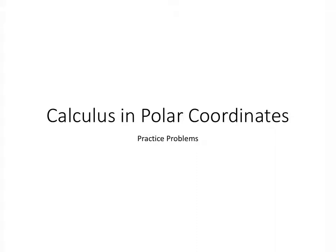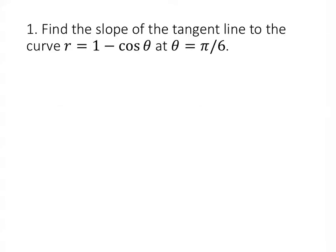This video contains the solutions to the calculus and polar coordinates practice problems. For this first problem, we're asked to find the slope of a tangent line to a polar curve, r equals 1 minus cosine theta, at theta equals pi over 6.